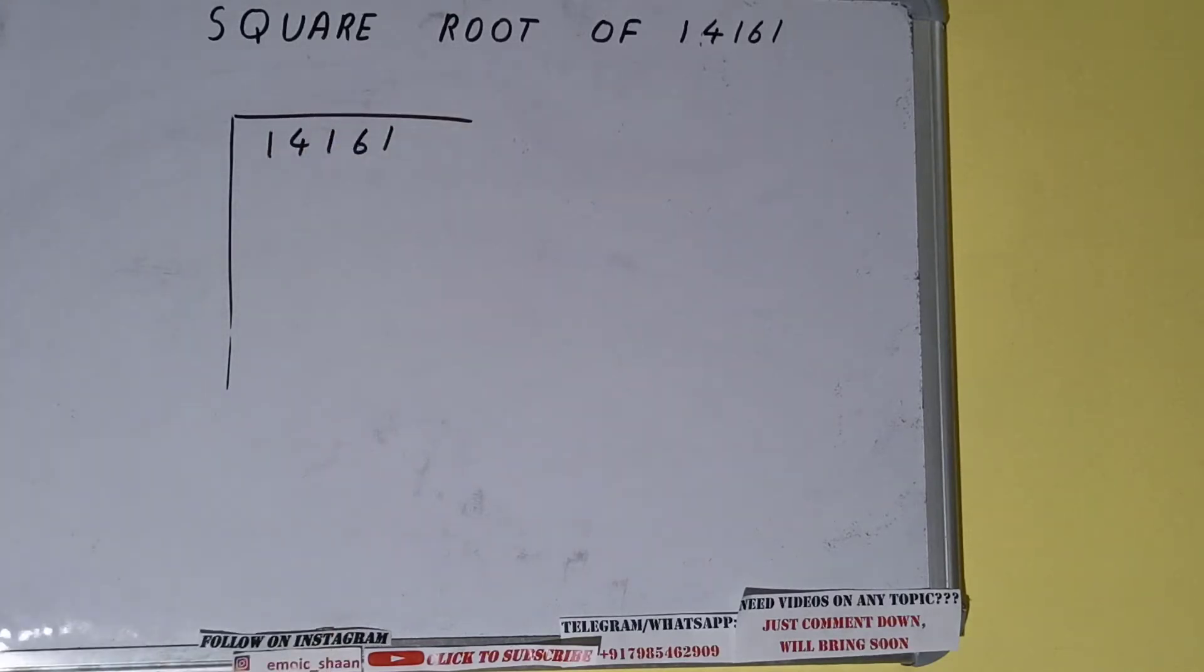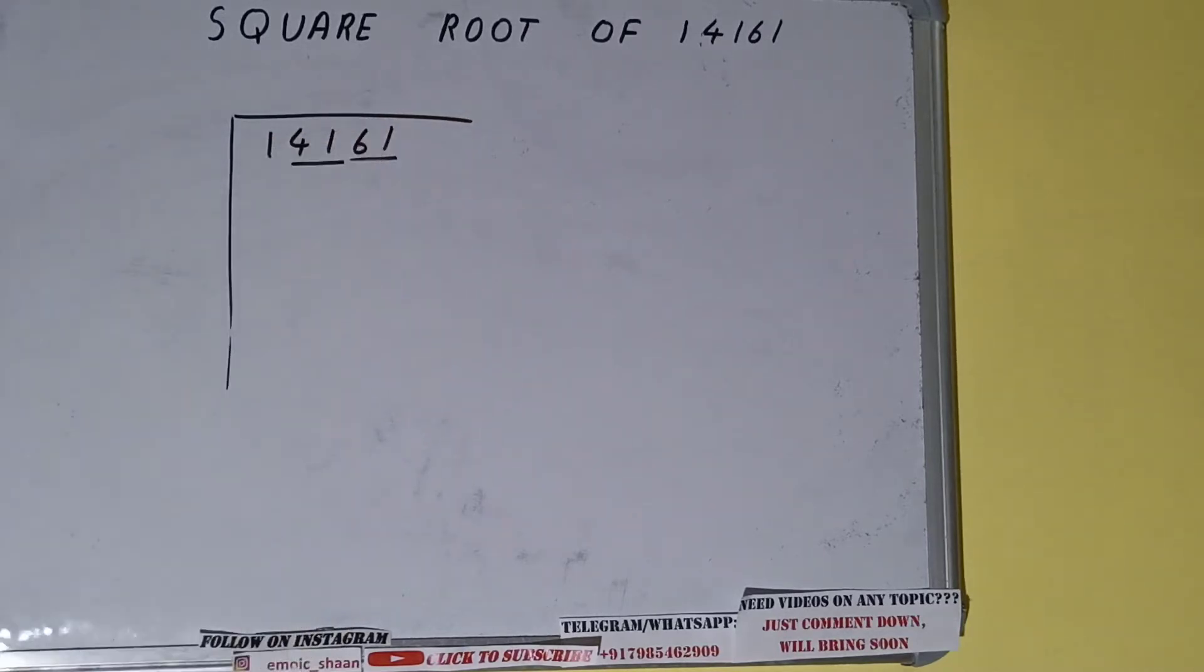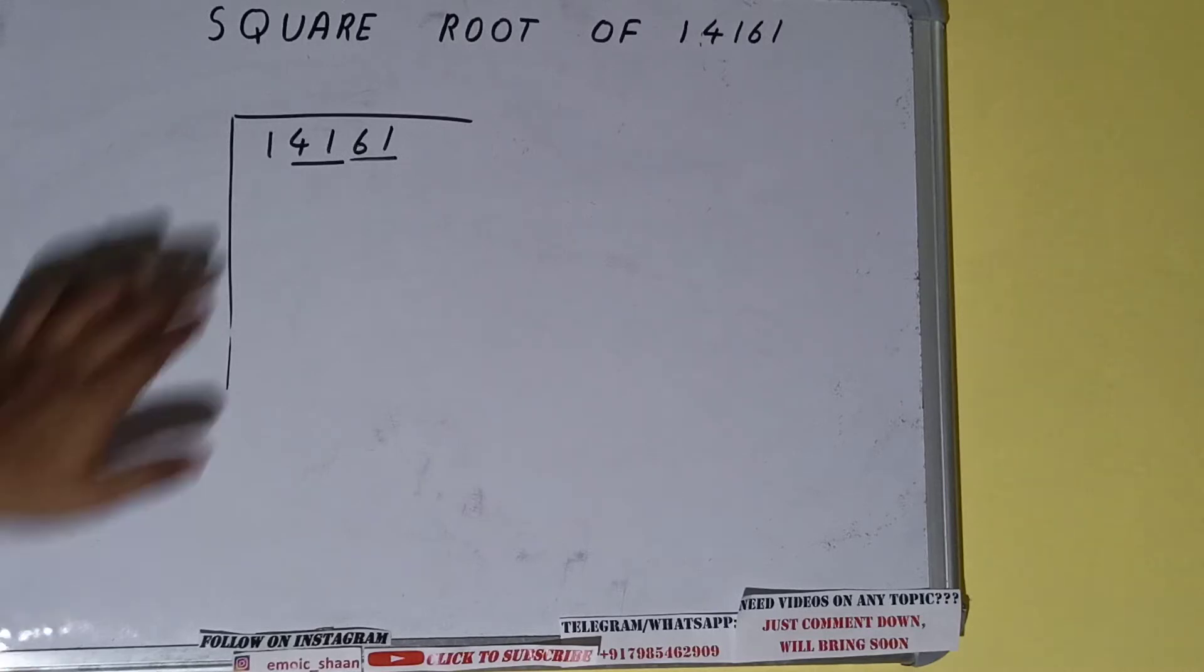The next thing we need to do is form pairs from the right-hand side. So one pair will be this, one pair will be this, and this one will be left out. So first we'll divide this one and then we'll bring down the pairs.